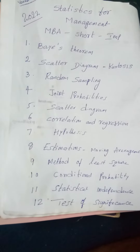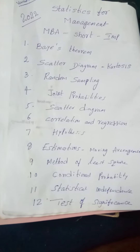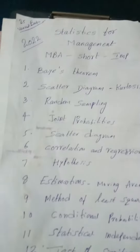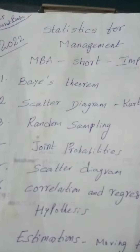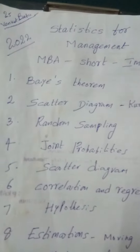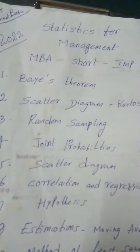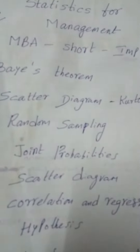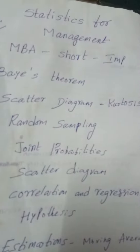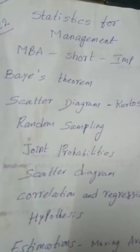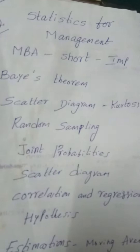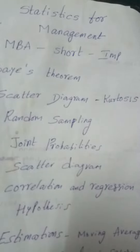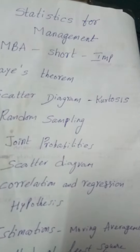My dear students, now even if you concentrate on any 3 units, it is going to give good marks to you. See these questions like Bayes' Theorem — and Scatter Diagram is there in correlation topic unit number 5 — we will find kurtosis and skewness.